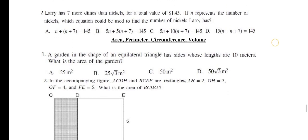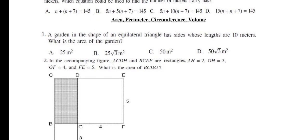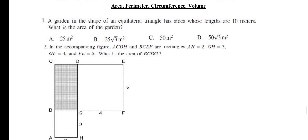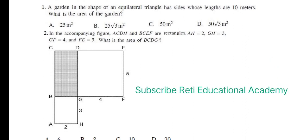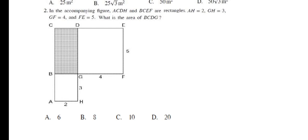Questions from area, perimeter, circumference and volume. Number 1: A garden in the shape of an equilateral triangle has sides whose length is 10 meters. What is the area of the garden? The right option is B. And the right answer is C, 10.